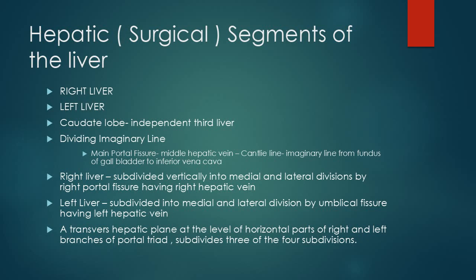The falciform ligament is on the left side. On the right side of the Cantlie line, or middle hepatic vein, is the right liver, and on the left side is the left liver. The quadrate lobe, which we spoke of earlier, is on the right side — not on the left side. So the quadrate lobe is in the right liver. This imaginary line containing the middle hepatic vein divides the liver into right and left.